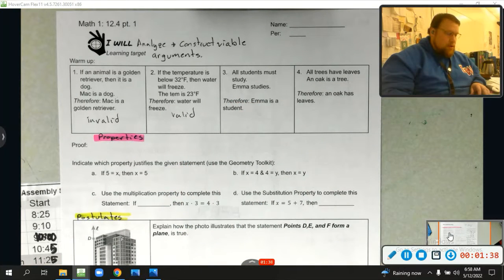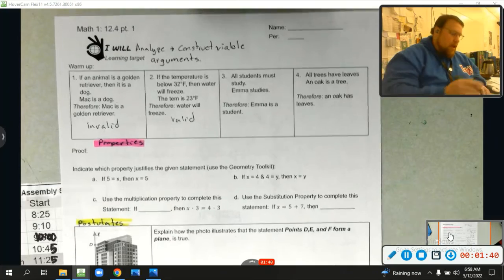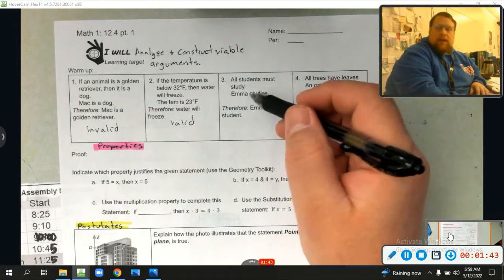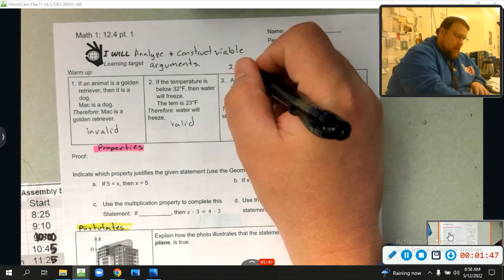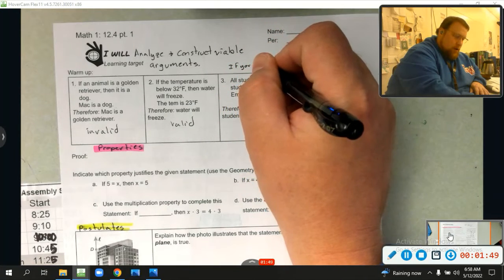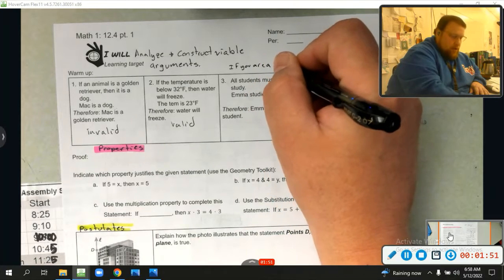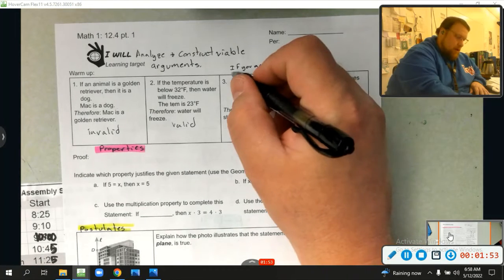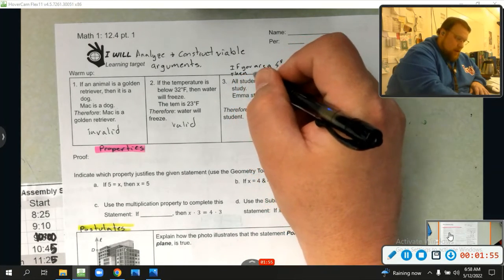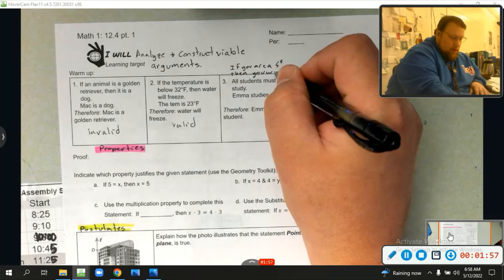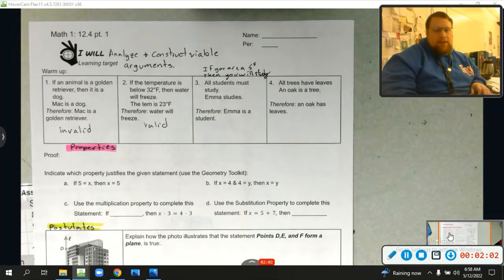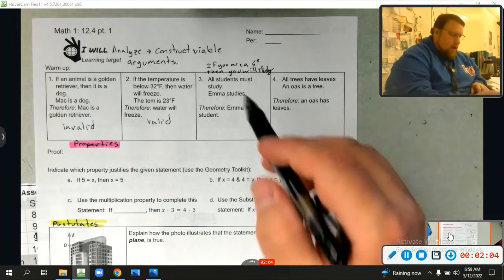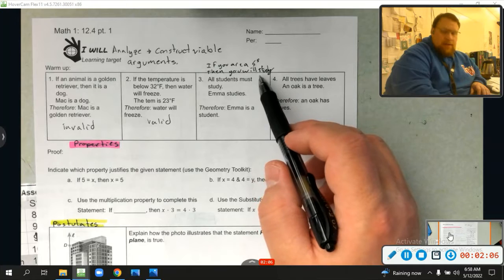All students must study. Whenever you see these all statements, you can actually rewrite that. Say something kind of like this: If you are a student, then you will study. Okay? It says the same thing. That's the same type of statement that we see right there. Emma studies.